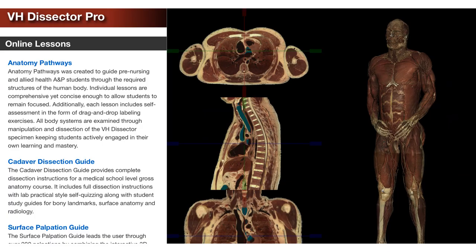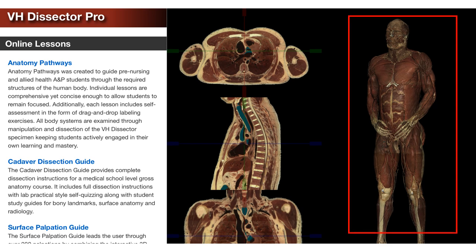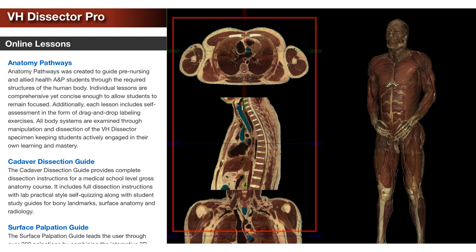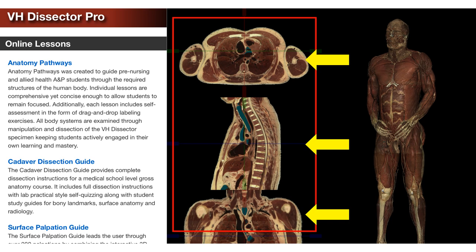Once you launch the VH Dissector, you will encounter this screen. The rightmost panel will be a 3D anatomy image. The middle panel will display sectional views such as axial, sagittal, and coronal sections, and the left panel will contain online lessons. You can move the 3D body image around and the cross sections will move accordingly.